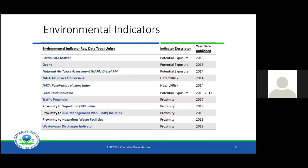These are the environmental indicators built into the tool. We have 11 of them and they really do span the gamut of potential environmental issues a community may be facing, whether air toxics, water, or other types of issues. The first five are mostly air-related. All the metadata behind these is available on the website — if you have questions on how these environmental indicators are calculated, the year published, or what they're actually measuring, all that is available on the website, and I'll show you how to easily access that in the tool.